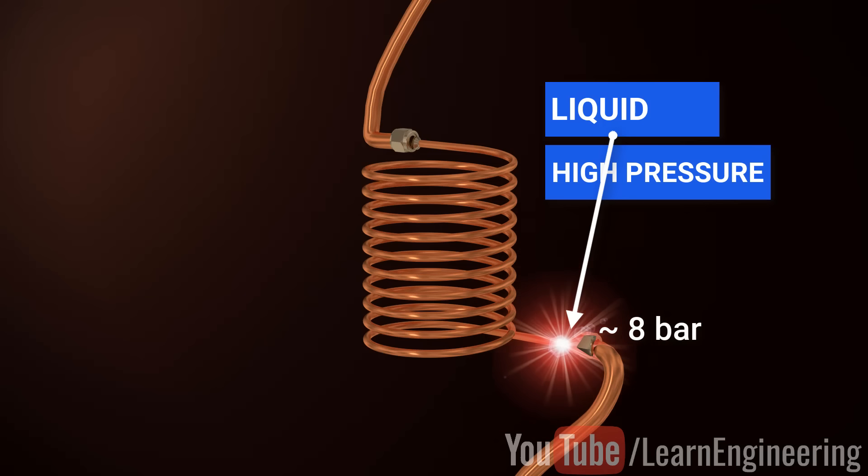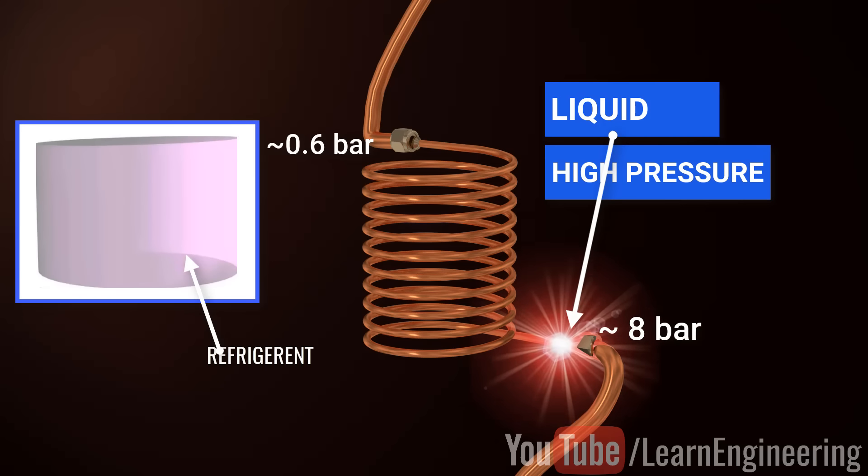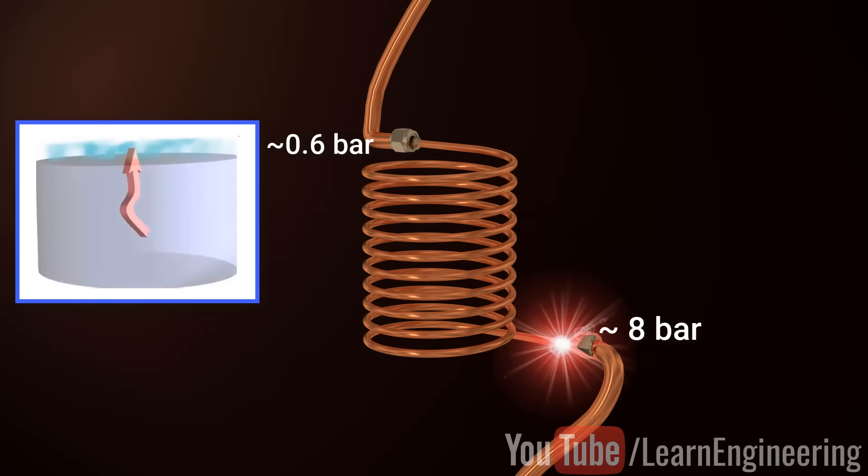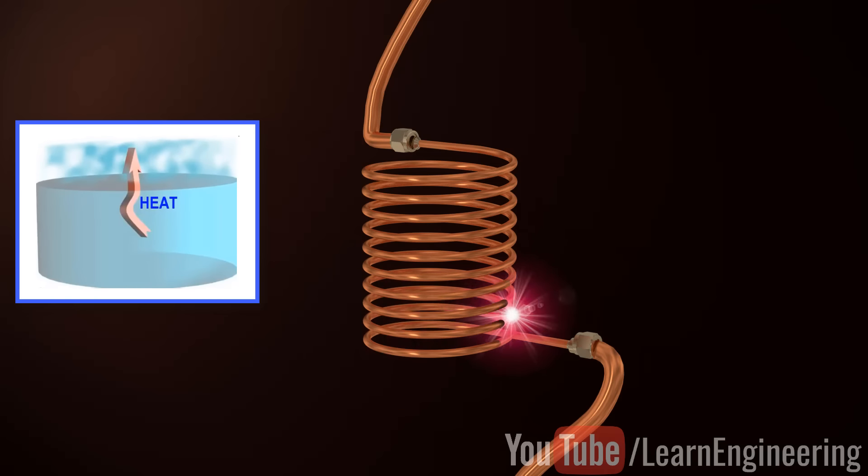The throttling device is an obstruction to the flow, so a huge pressure drop occurs when the liquid flows through it. As the pressure drops, the boiling point of the liquid comes down. Thus, the refrigerant liquid evaporates. The energy required for such evaporation comes from the refrigerant, so its temperature drops.